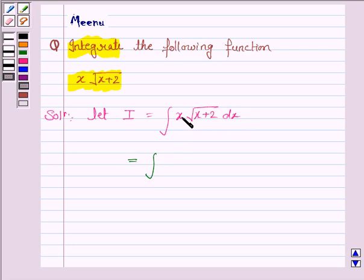Now we add and subtract 2 from this. So this becomes x plus 2 minus 2 under the root x plus 2 dx.